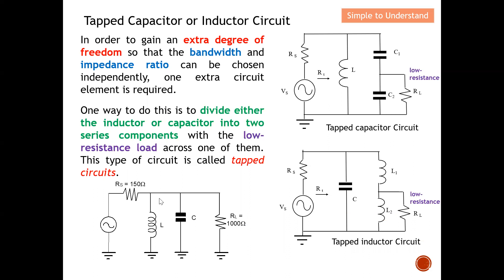This diagram shows a tapped capacitor circuit. For a quick comparison: in the tapped capacitor circuit, you can see the source resistor and inductor, and I split the capacitor into two, adding an extra capacitor — that's why it's called a tapped capacitor circuit. In contrast, in the tapped inductor circuit, I add an extra inductor instead. By dividing either the inductor or capacitor into two series components, I can control my bandwidth and impedance ratio.